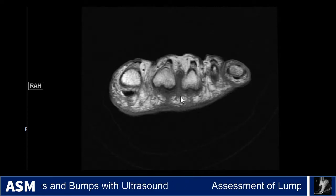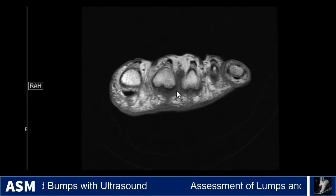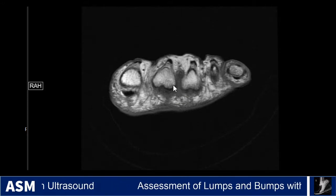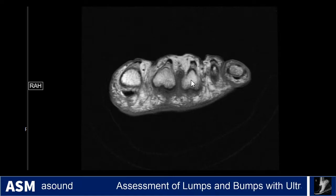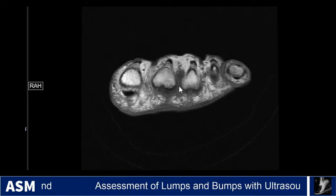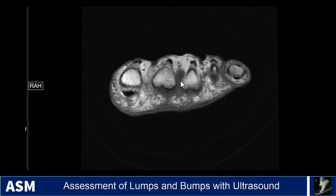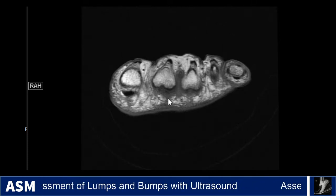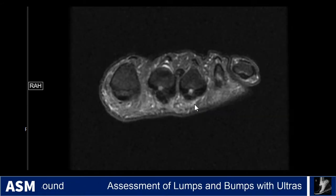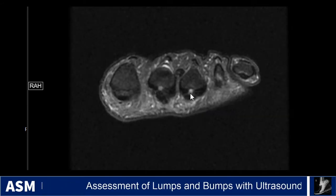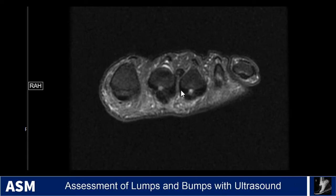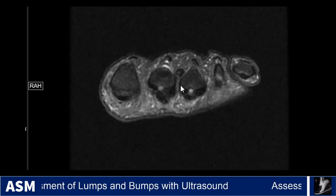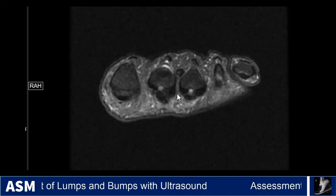An MRI was performed, and you can see this dumbbell-shaped mass extending along the plantar aspect of the second web space between the second and third metatarsal heads. In this case, there's no dynamic squeezing, so you don't see it popping back and forth. Other pulse sequences would be helpful. This coronal short-access proton density fat-suppressed image shows maybe a trace amount of fluid in the intermetatarsal bursa, but most of this is hypointense tissue.